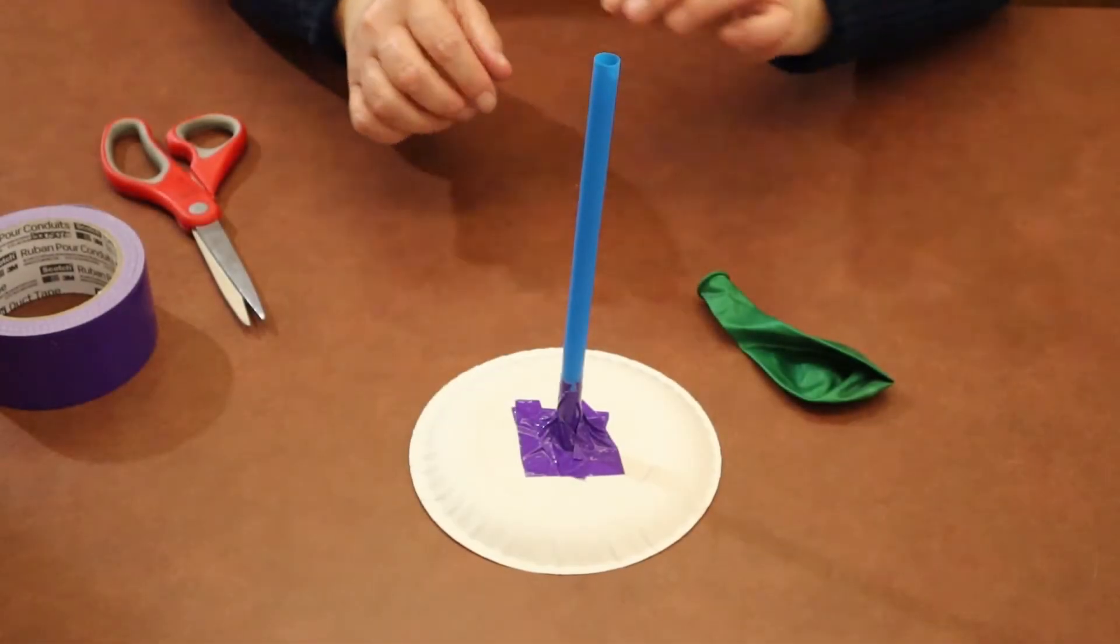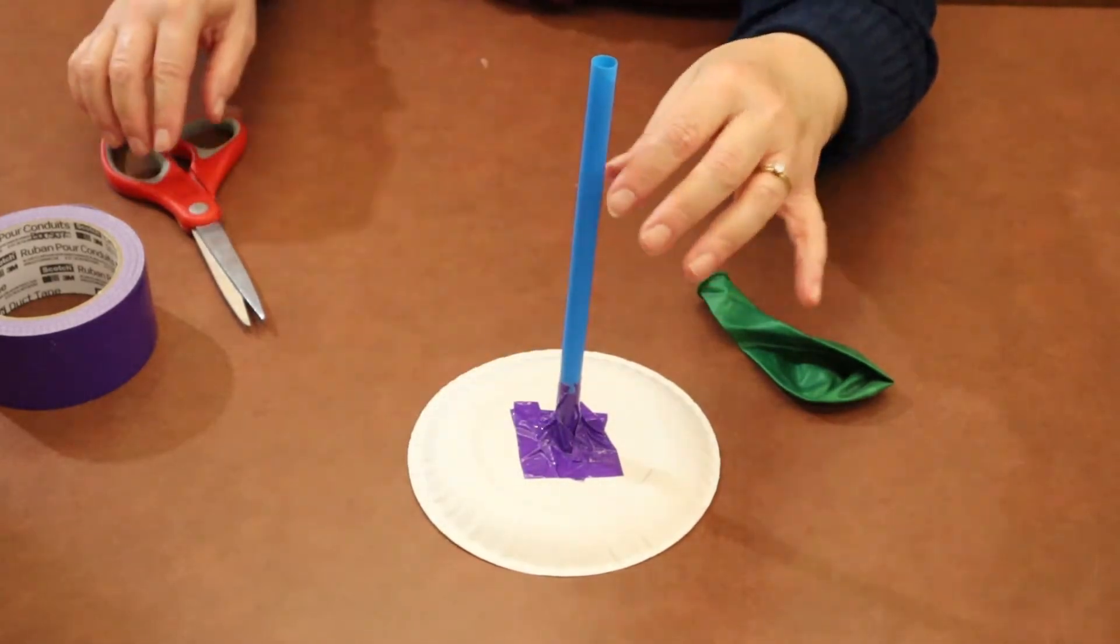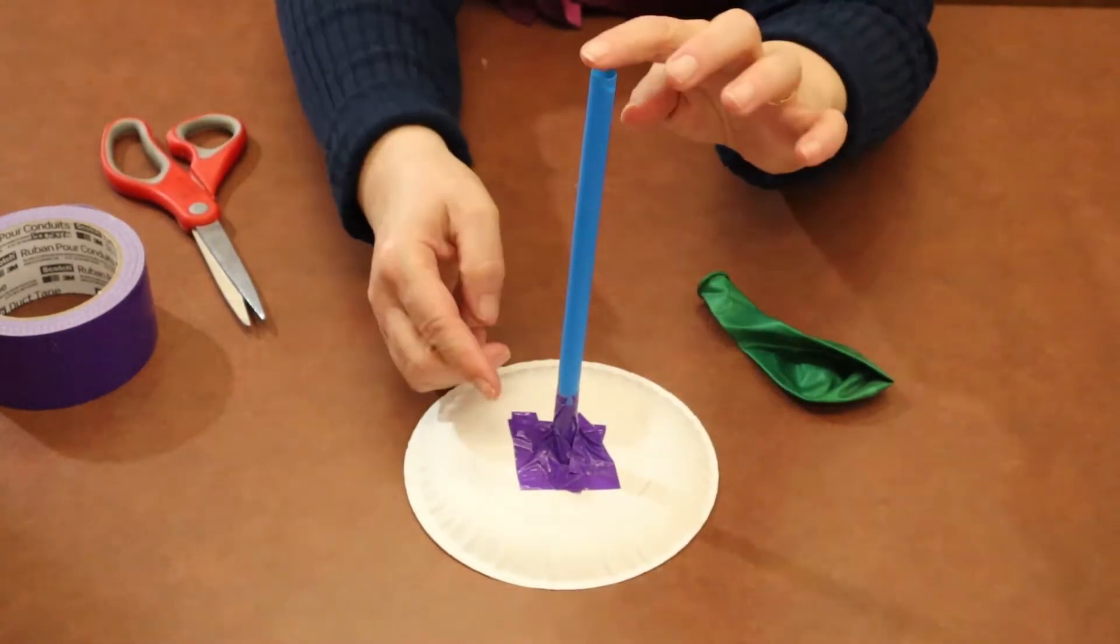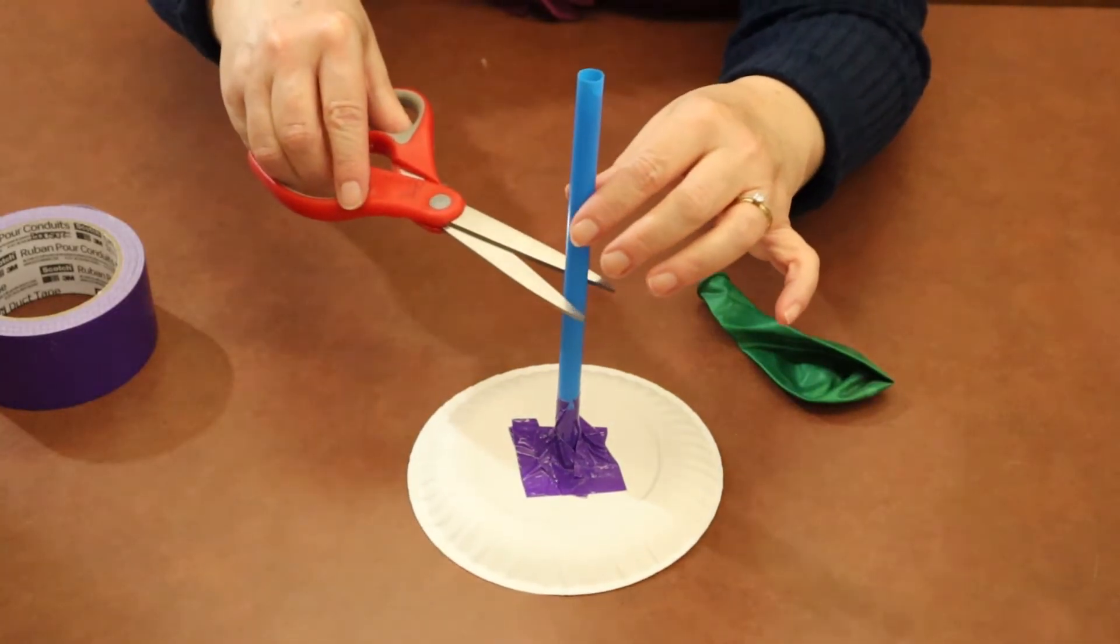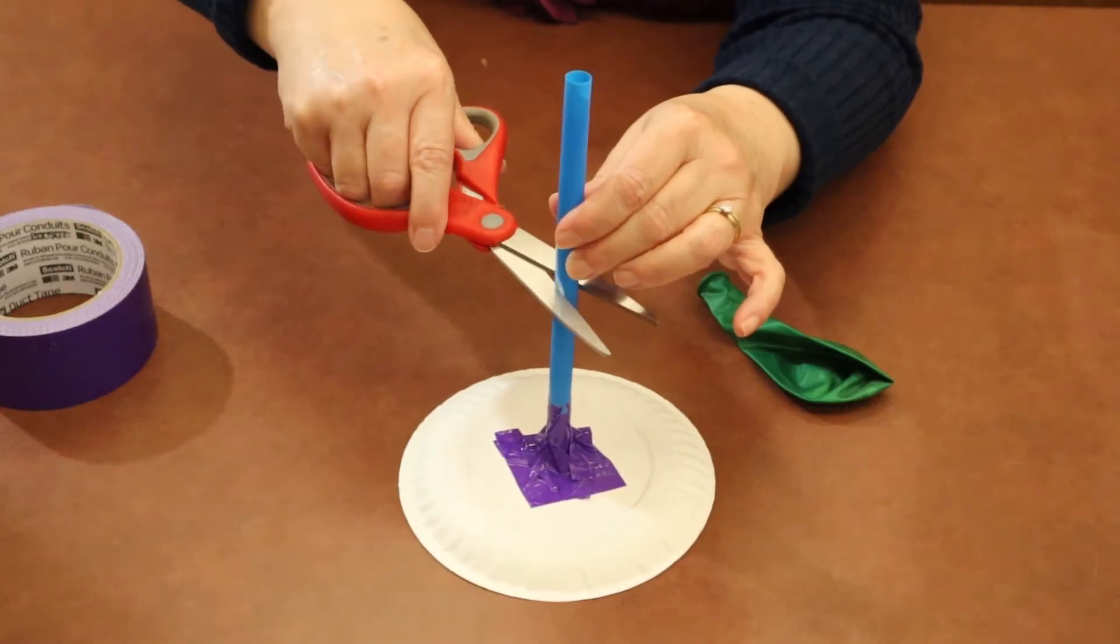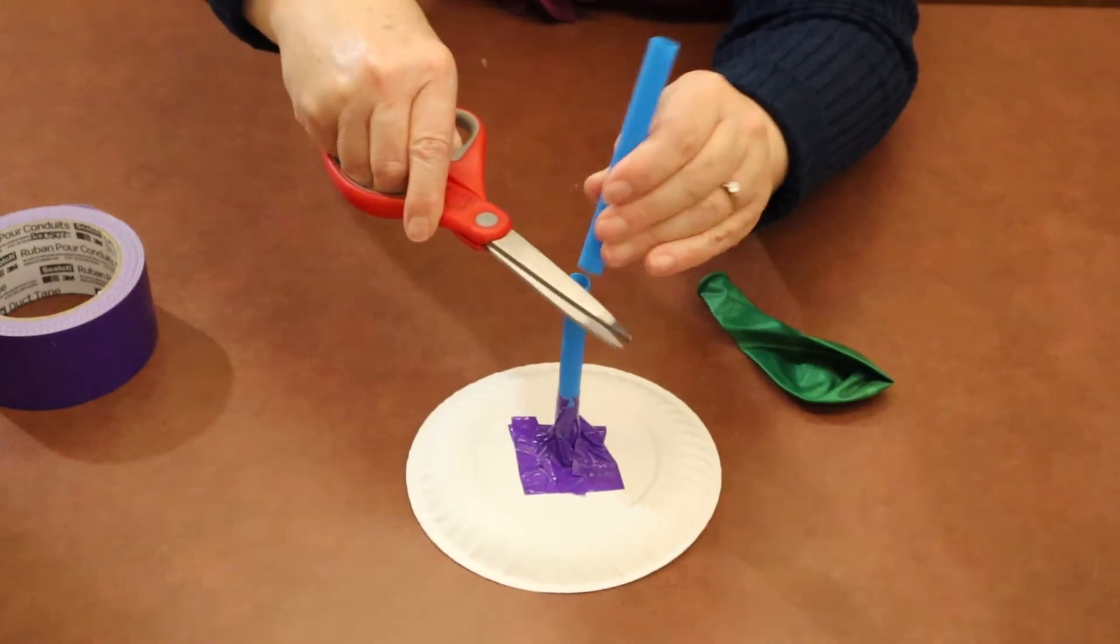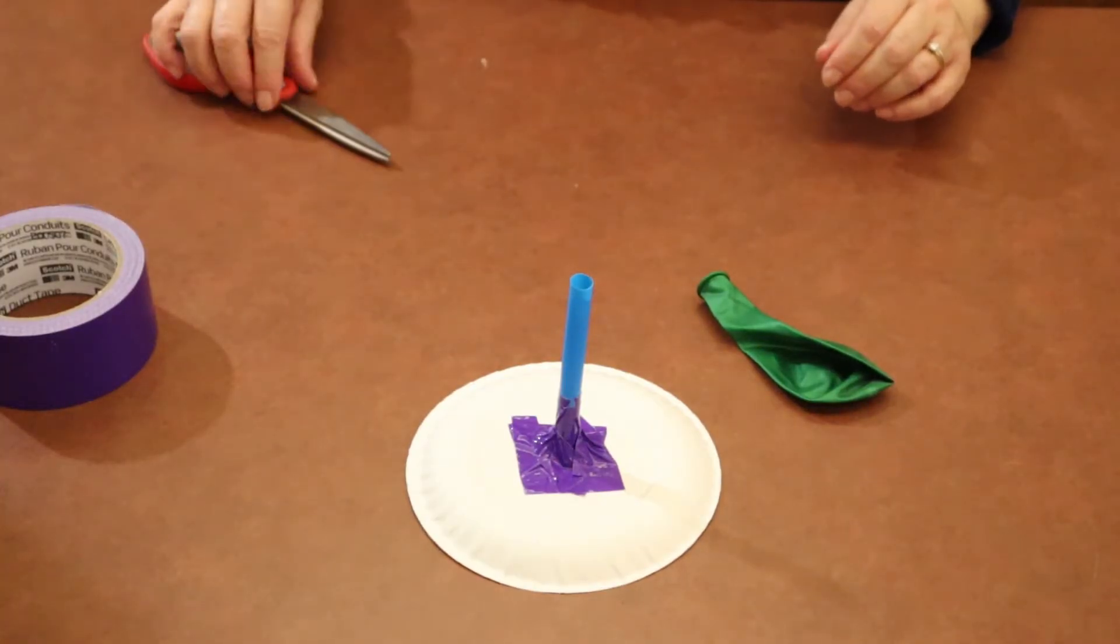The next step in our project is to change the size of our straw. Look at how much straw is sticking out here and cut it about in half. It doesn't have to be exact. Just take your scissors and cut your straw, and set that aside because we'll use that again in a minute.